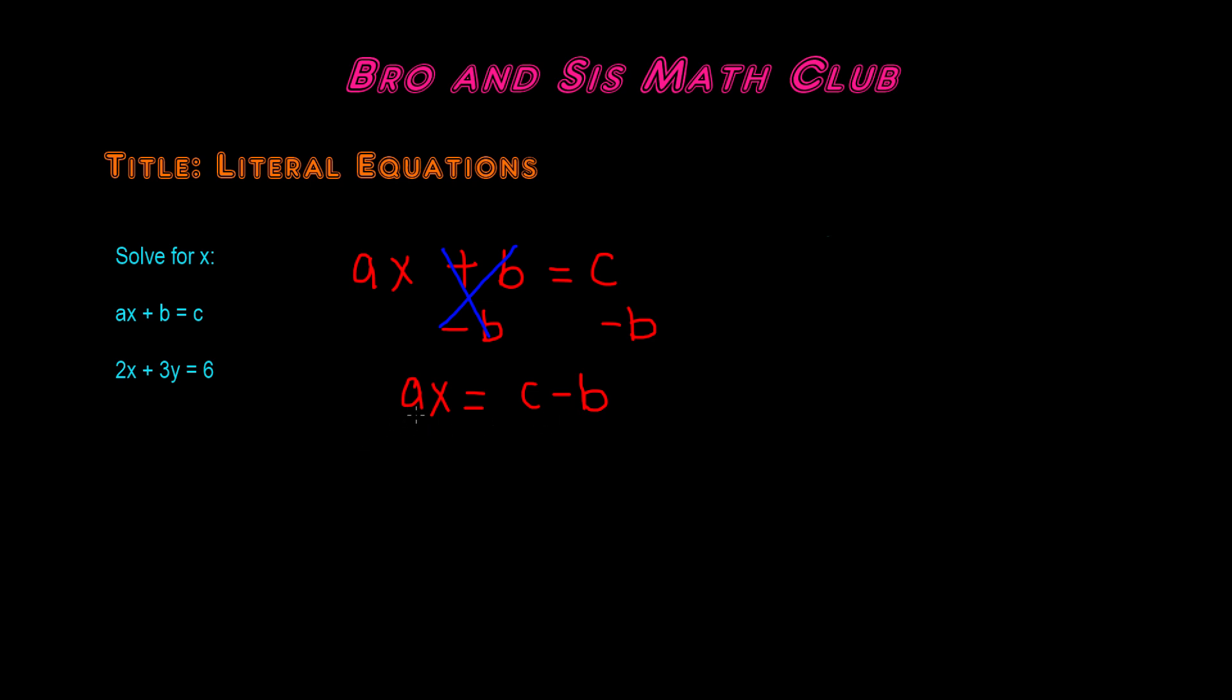So now we have ax is equal to c minus b. Now we have to get rid of the a. a is being multiplied to x, so we have to divide by a because the opposite of multiplication is division. So a and a cancel each other out. And we're left with x is equal to c minus b over a.